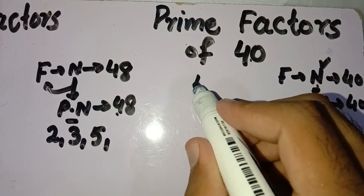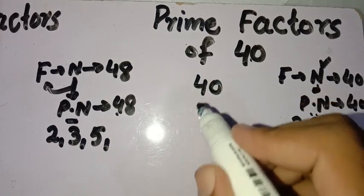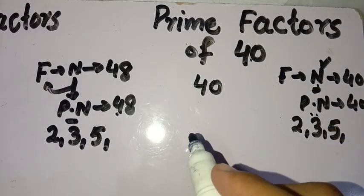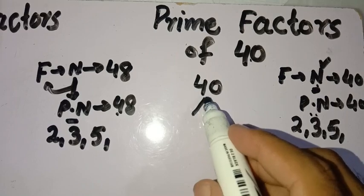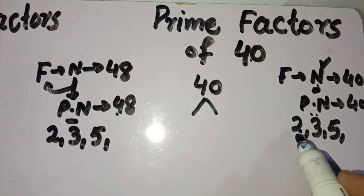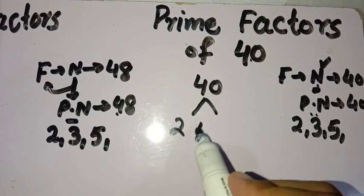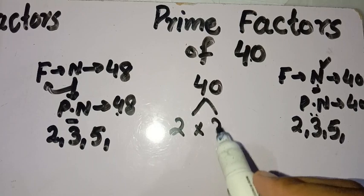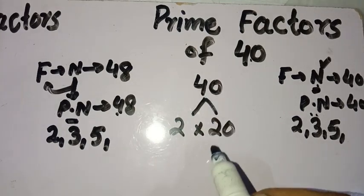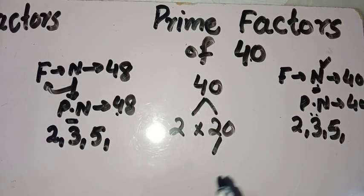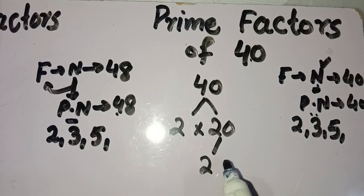We will use the factor tree method. We write 40 and divide it by the smallest prime number, which is 2. So 2 times 20 equals 40. Then we divide 20 by the smallest prime number — 2 is the smallest number which divides 20 — so 2 times 10 equals 20.